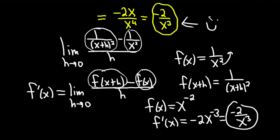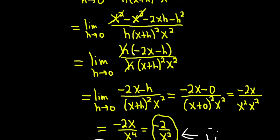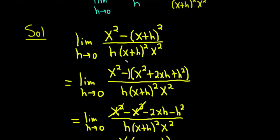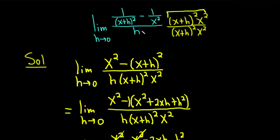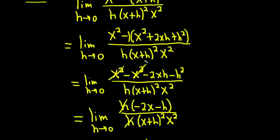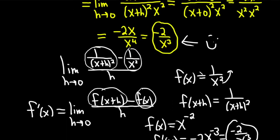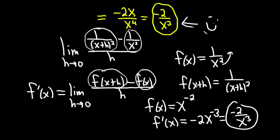And that's the same answer we got — negative 2 over x cubed. So if you recognize this problem as the derivative of 1/x² in limit form, you can use the power rule as a shortcut. But if you see the problem as written in a book or class, they typically expect you to go through all of the steps. This is just a clever shortcut to share. Anyway, I hope you've learned some mathematics in this video. Until next time, good luck and take care.